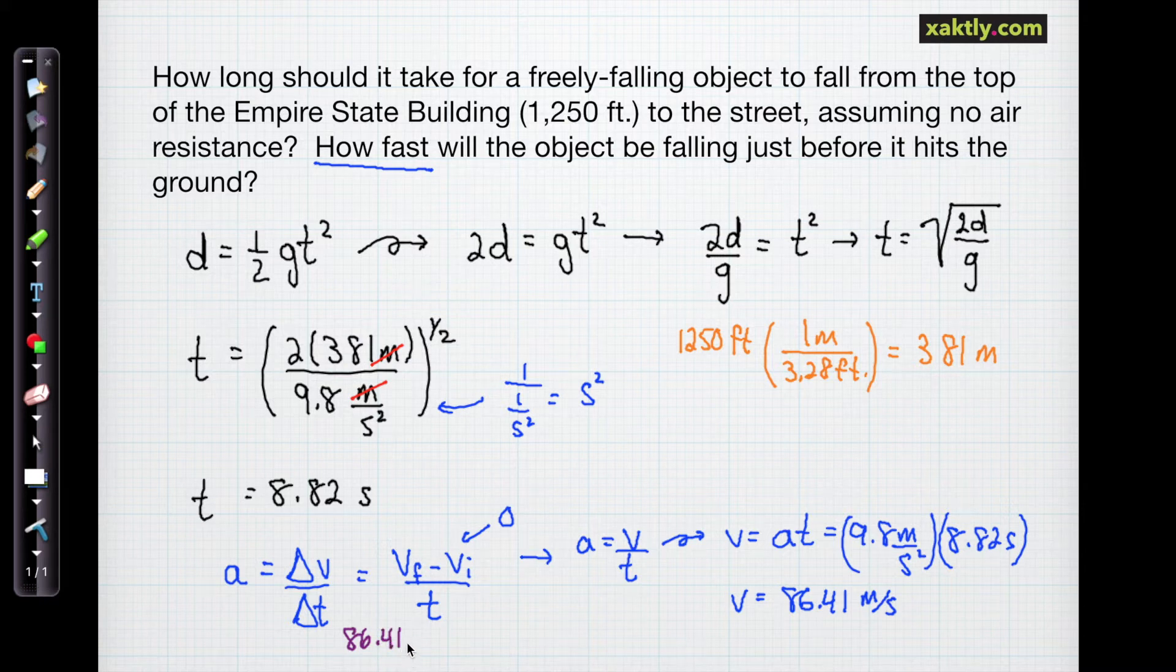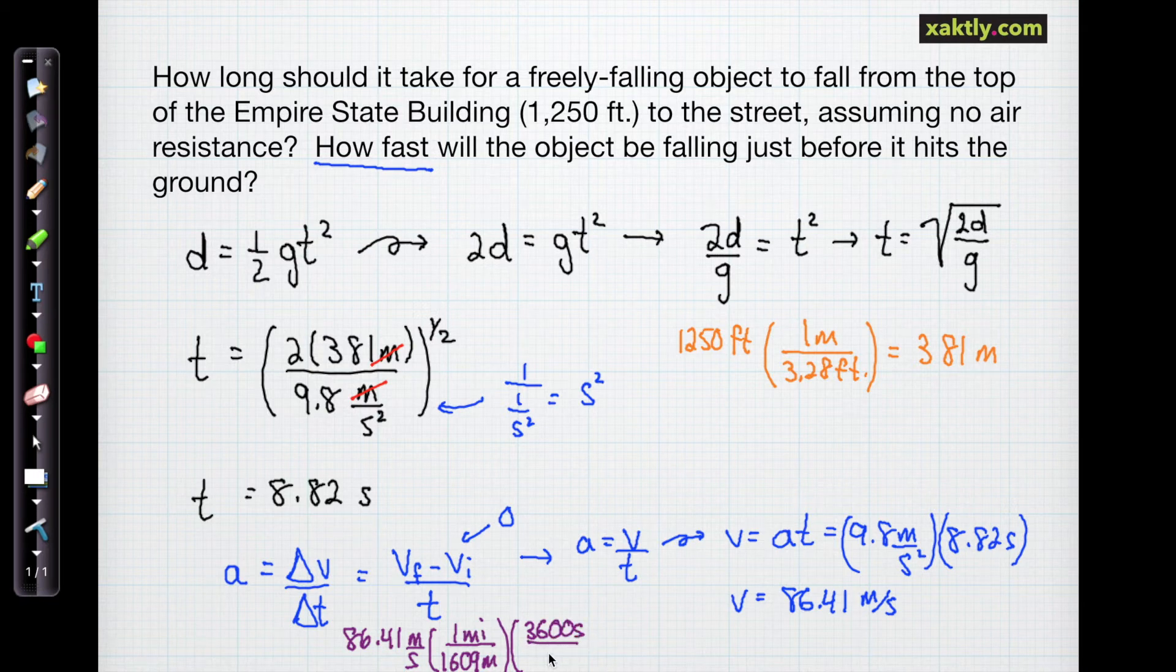Just out of curiosity, let's convert that to miles per hour. 86.41 meters per second. And in every mile, there's 1,609 meters. I just remember that. And let's see, there's 3,600 seconds in every hour. So let's see, meters cancels meters, seconds cancels seconds. So I'm in miles per hour now, and that is roughly 193 miles per hour.